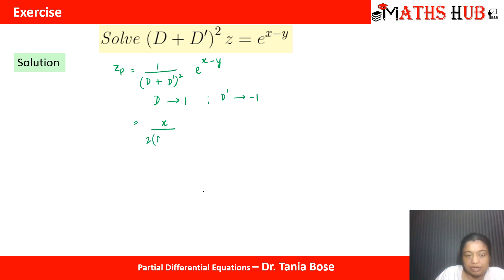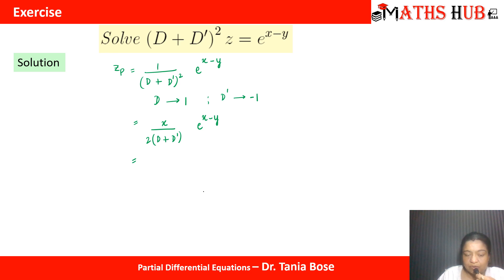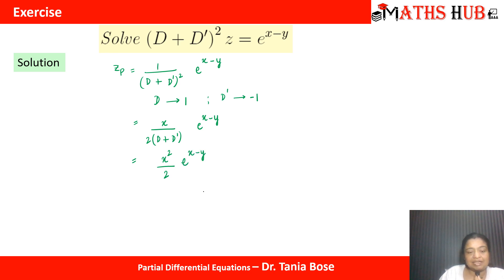So we now have x over 2(D plus D') multiplied by e^(x−y). Again replace D with 1 and D' with −1 — it becomes zero again, so it is another case failure. We multiply with another x, giving x², and the derivative becomes 2. So zp becomes x²/2 times e^(x−y).